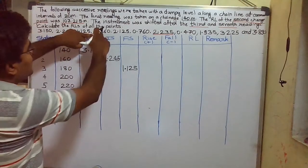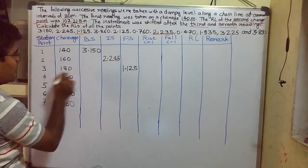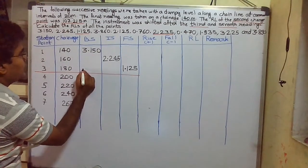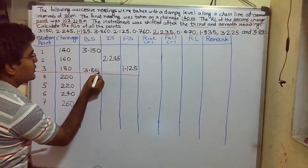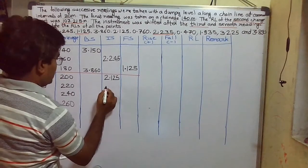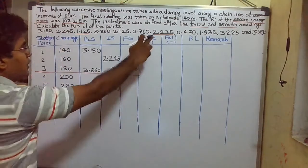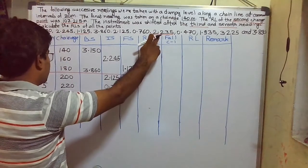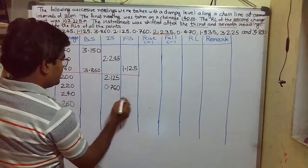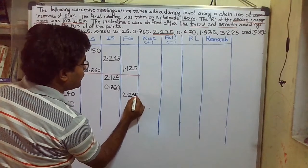After the fore sight reading, the next reading is written in the back sight column but in the same row — that is 3.860 as the back sight reading. Then intermediate sight readings are 2.125 and 0.760. Again, there is a change point after the seventh reading, so the seventh reading 2.235 comes in the fore sight column.